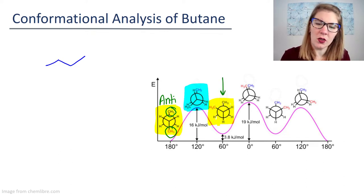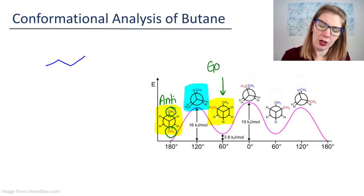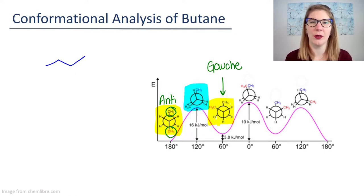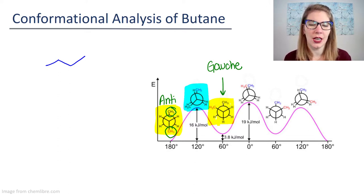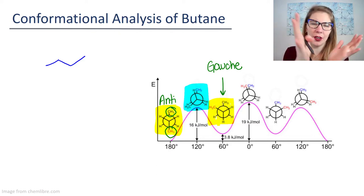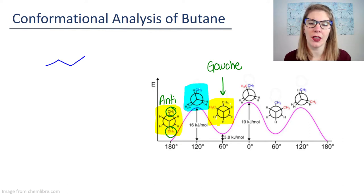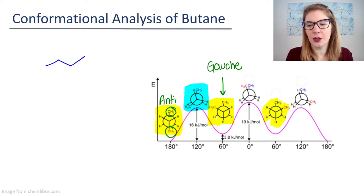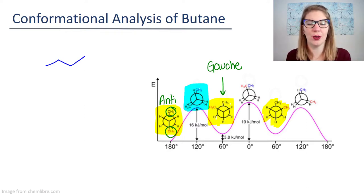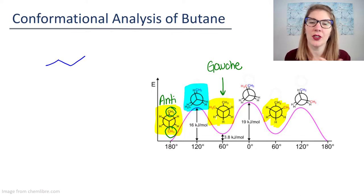We're going to call this one gauche—however your professor chooses to pronounce it, it's fine. This is still a staggered position, except the two CH3s are not opposite one another; they're 60 degrees away from one another. The next one here is still gauche.